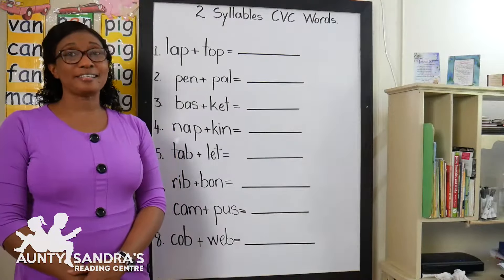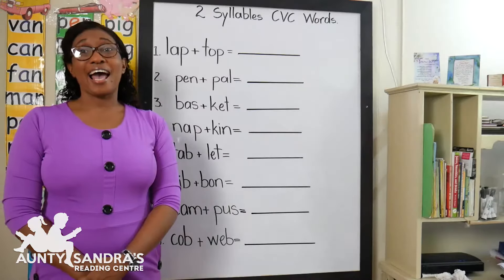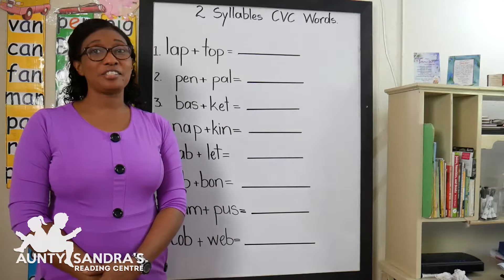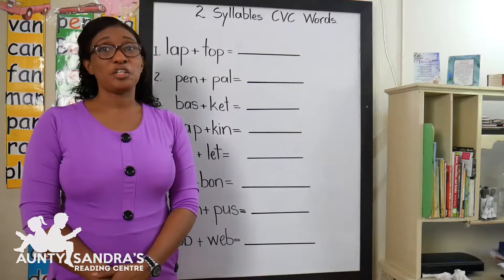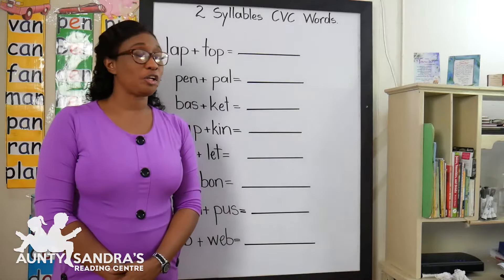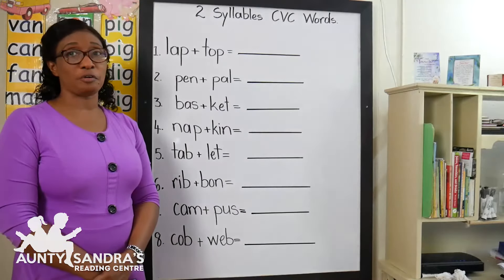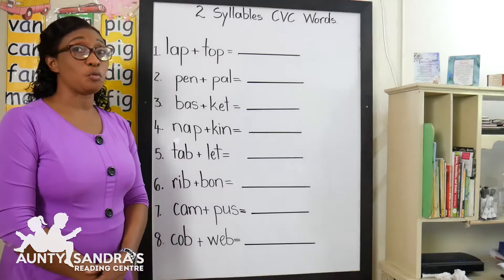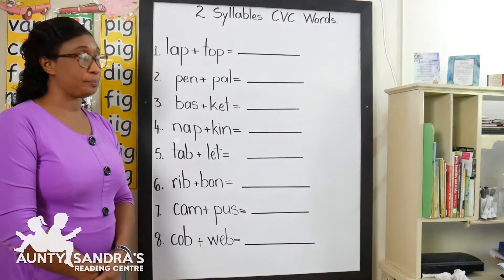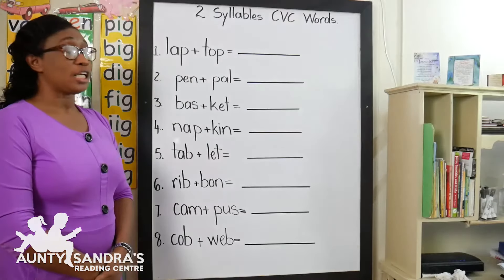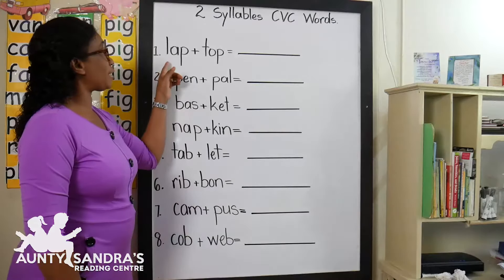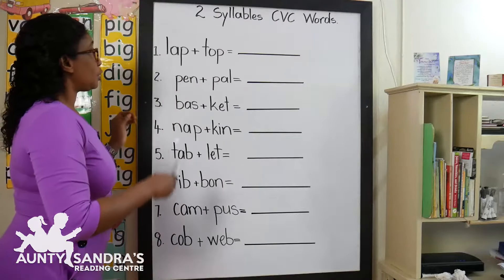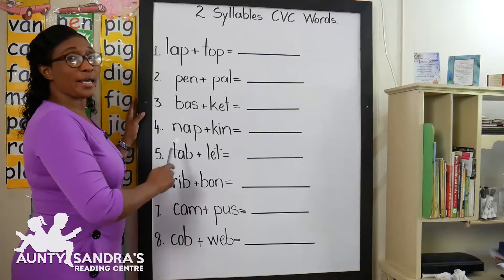Hi boys and girls, I am Auntie Sandra and today you are going to learn to join two parts of a word to make it into one word. Each part is called a syllable. Let us go ahead.